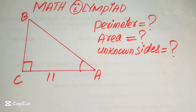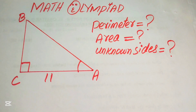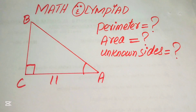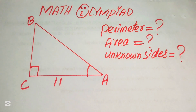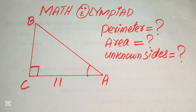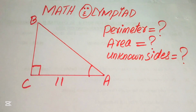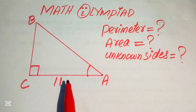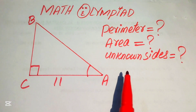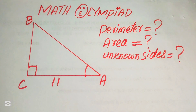Hello everyone, welcome. We have a nice right triangle in which the length of one side is given as 11. Our target is to find the perimeter of this right triangle, as well as the area of this triangle, and also the unknown side lengths of this right triangle.